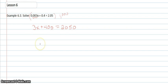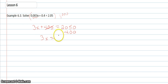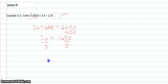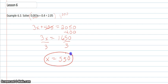Then we can go ahead and solve for x. I'll subtract 400, so I'll have 3x equals 1,650, and then just divide both sides by 3. So x equals 550, and that's my answer.